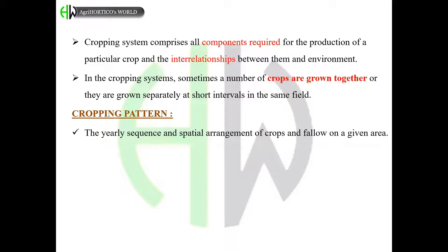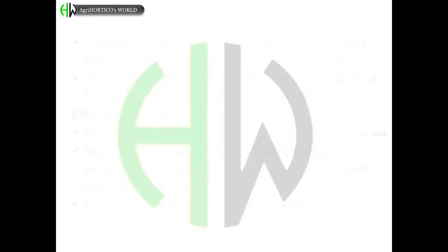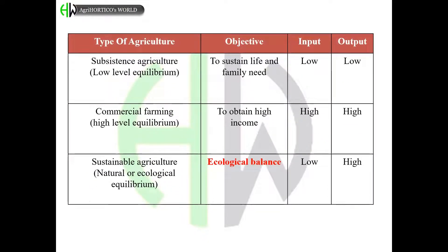In cropping systems, sometimes a number of crops are grown together or grown separately at short intervals in the same field. The cropping pattern refers to the yearly sequence and spatial arrangement of crops and fallow on a given area. Historically, cropping systems have been designed to maximize yield, but modern agriculture is increasingly concerned with promoting environmental sustainability — future ecology is more important than present economy.